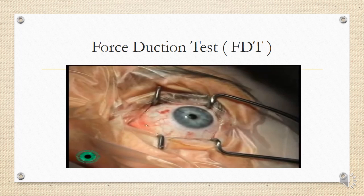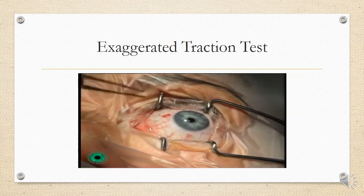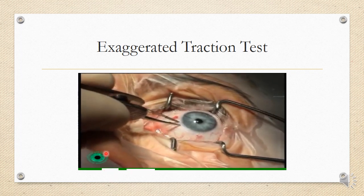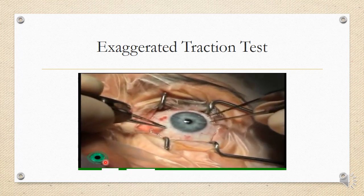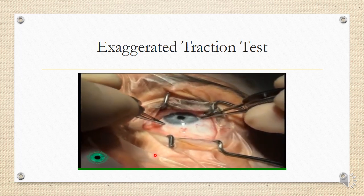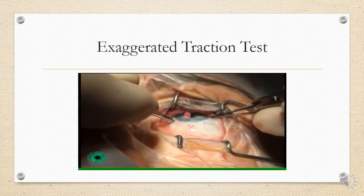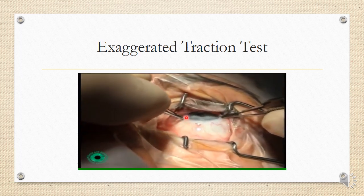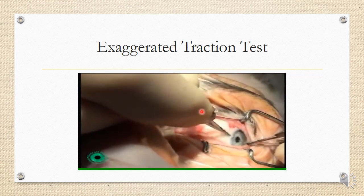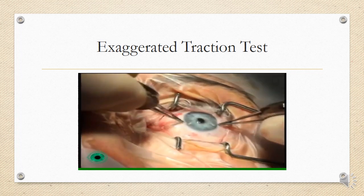In the force duction test, you grasp the globe and move it in different directions to see if the eye can move. In the exaggerated traction test, you move the globe into one particular superior position and observe whether the superior tendon actually moves with it or not.